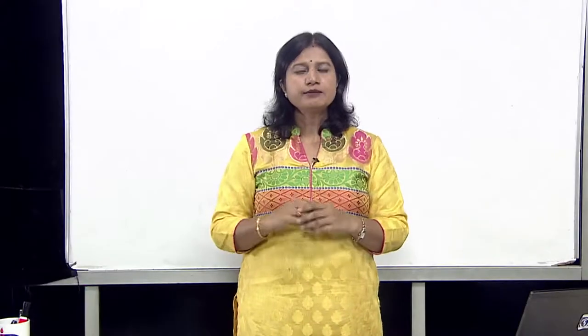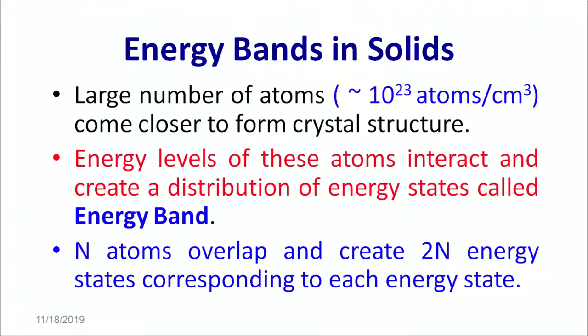The whole technological advancement of the 20th century is attributed to these semiconductors. To classify materials into these broad categories, energy bands play a very important role. So let's now begin with what energy bands in solids are. In case of solids, there is a collection of large number of atoms which come closer to form the crystal structure. The energy levels of these atoms interact and create a distribution of energy states known as energy bands. The n atoms which overlap together create 2n energy states corresponding to each energy state. Let's understand that in detail with the help of a graphical representation.